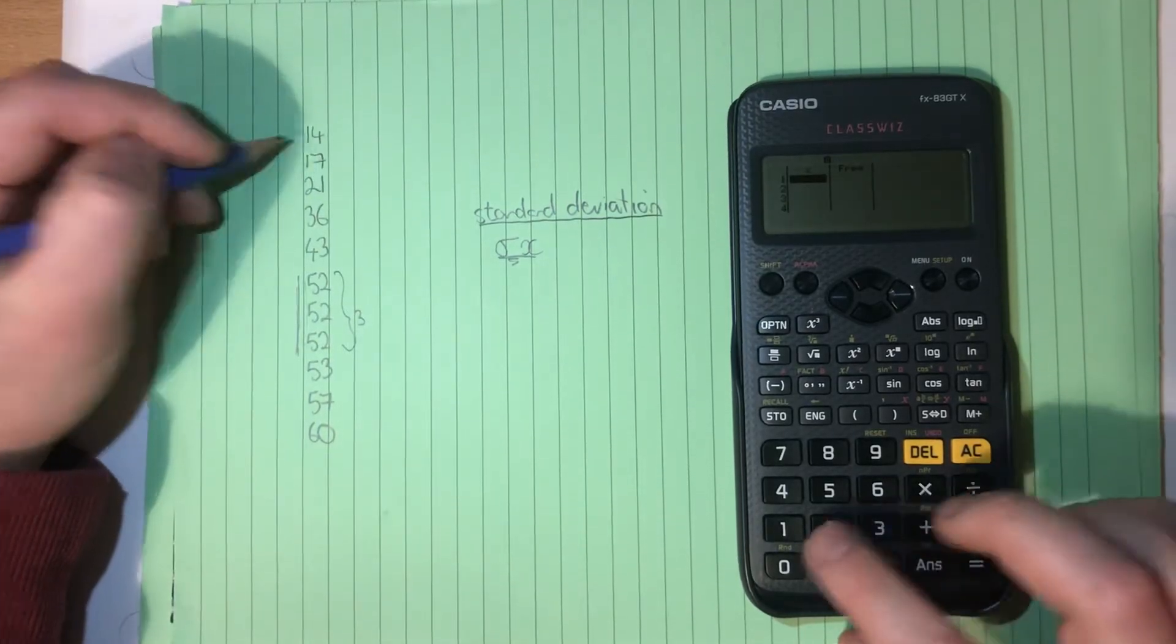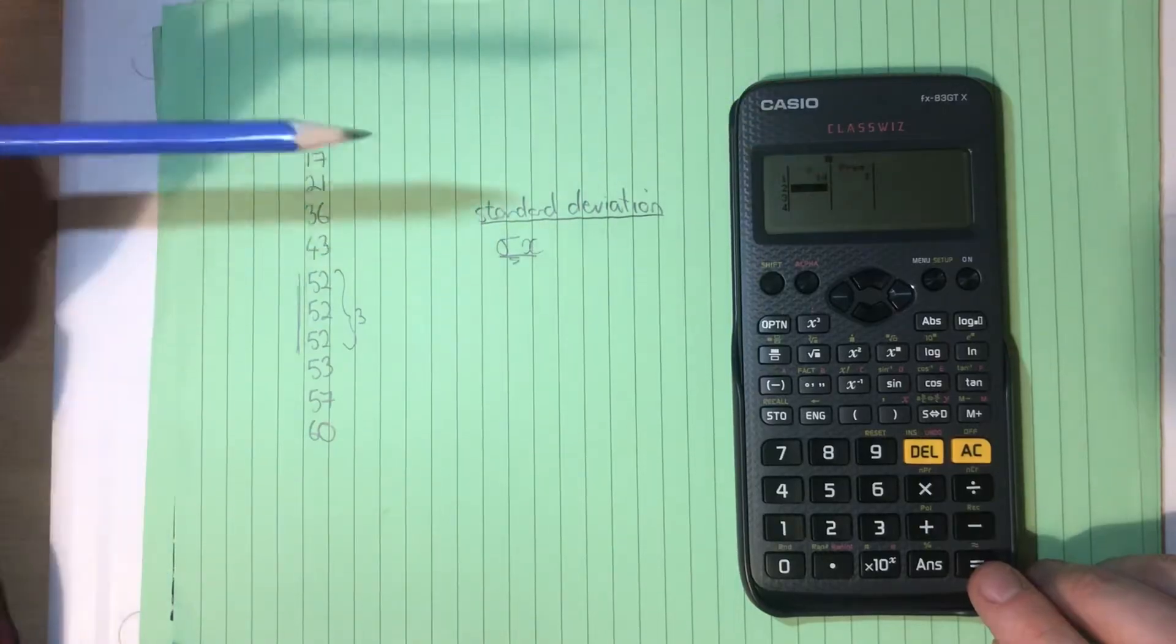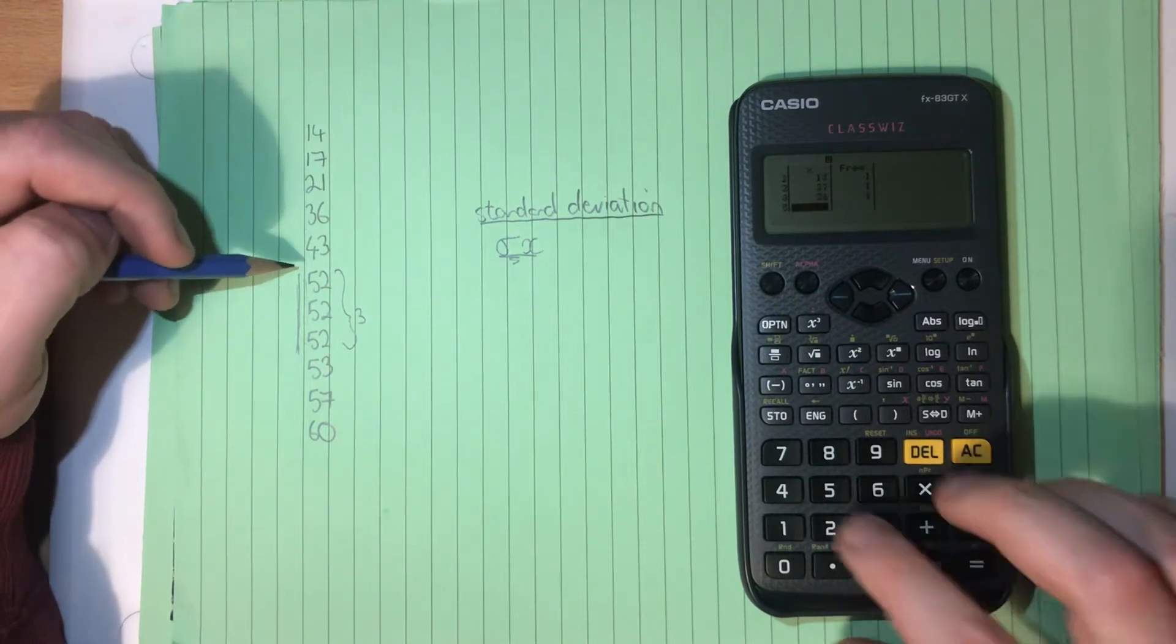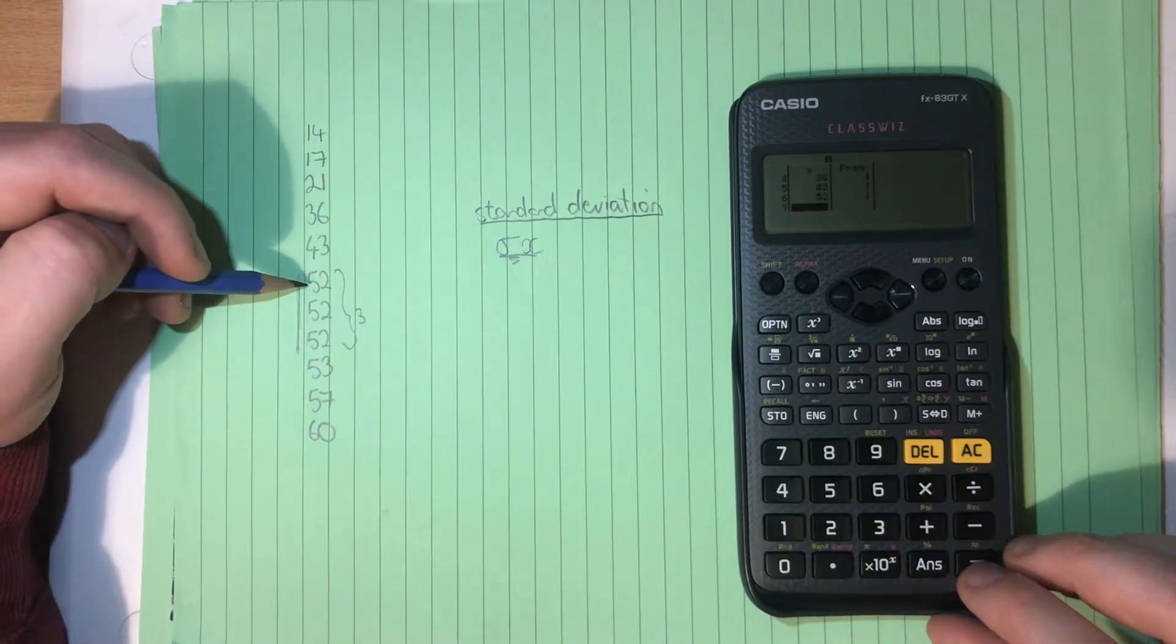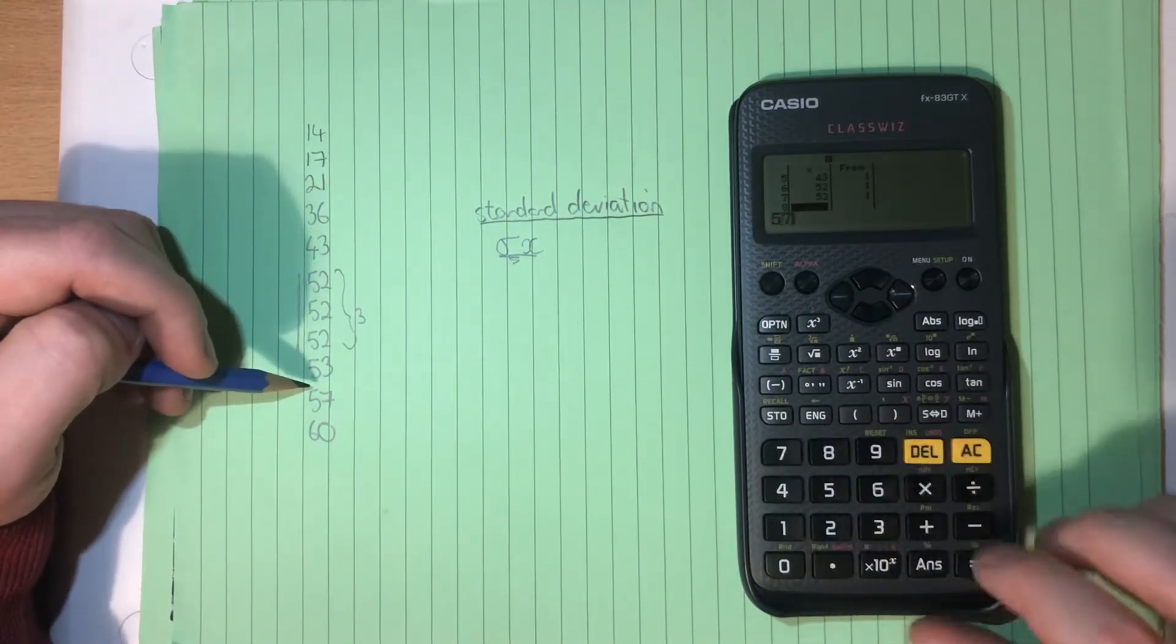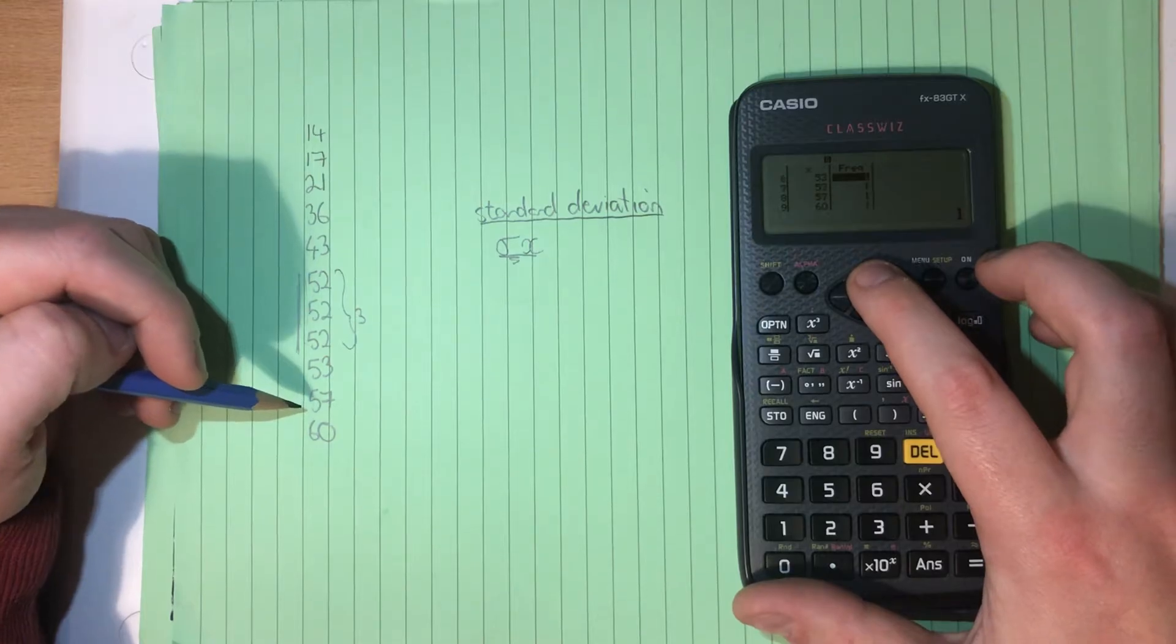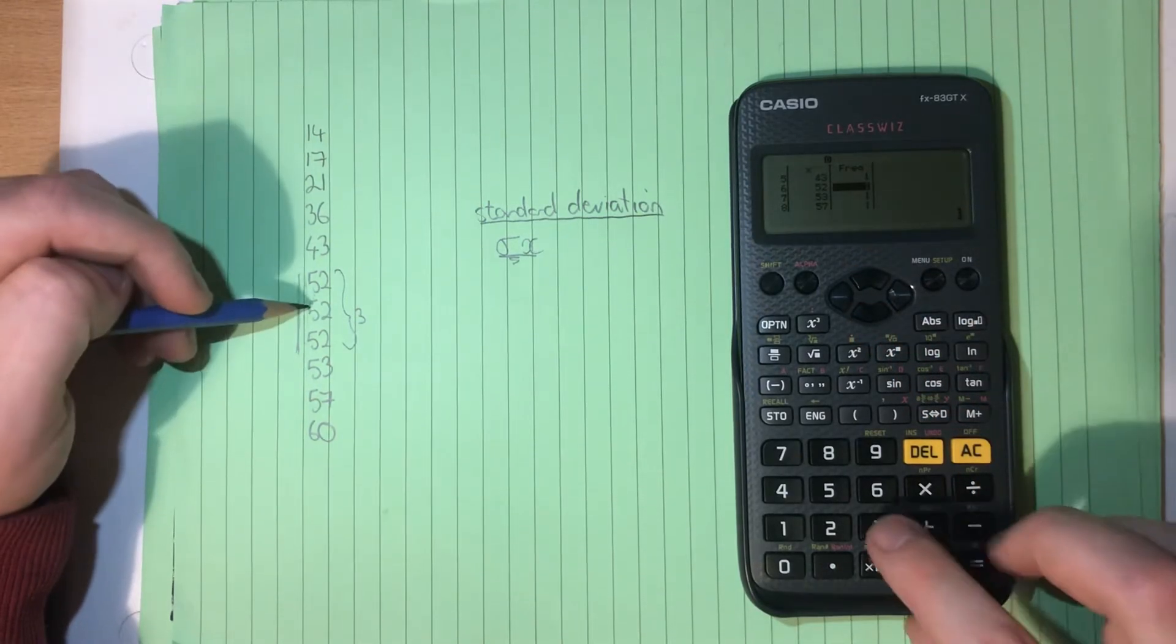So our first value is 14. Let's input it, and the default is number 1. And then we go 17 equals, then 21 equals, then 36 equals, then 43 equals, then 52 equals, and then 53 equals, then 57 equals, and then 60 equals. And we can scroll back up to where we had our 52, and there he is there. And we change that into a 3.